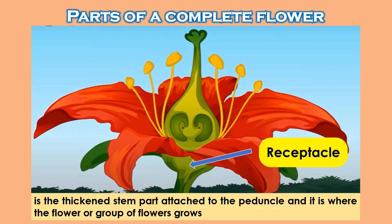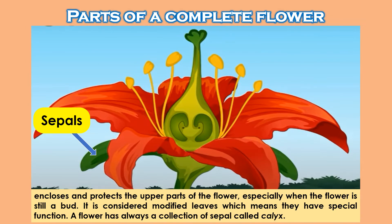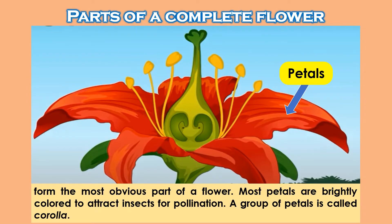Receptacle: It is the thickened stem part attached to the peduncle, and it is where the flower or group of flowers grows. Sepals enclose and protect the upper parts of the flower, especially when the flower is still a bud. Sepals are considered modified leaves, which means they have a special function. A flower always has a collection of sepals called calyx. Petals form the most obvious part of a flower. Most petals are brightly colored to attract insects for pollination. A group of petals is called corolla.